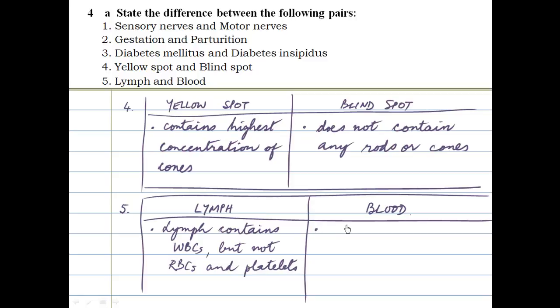Blood on the other hand contains all of these, that's the RBCs, WBCs, and the platelets. So we are done with the differences. Let's move on to part B.